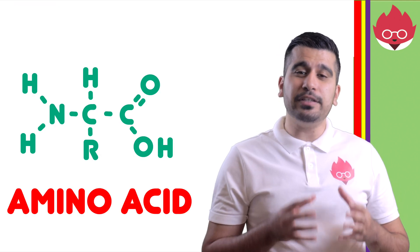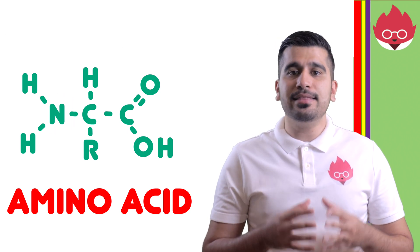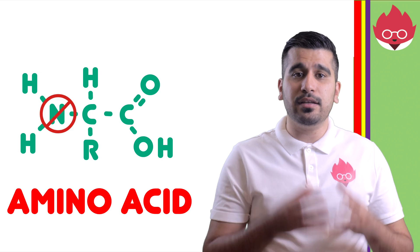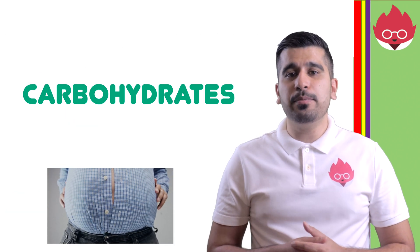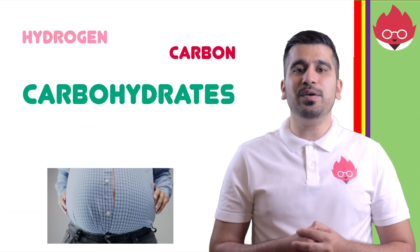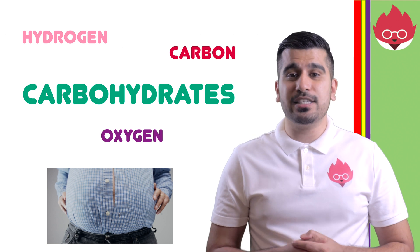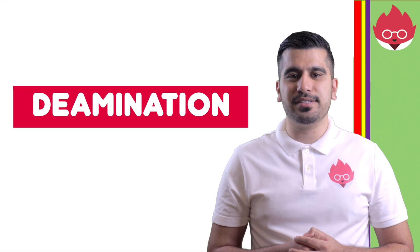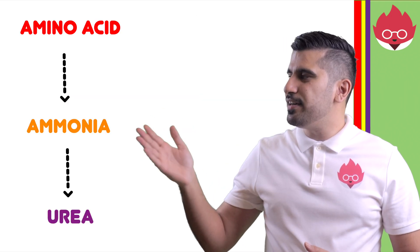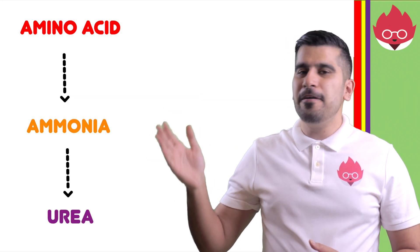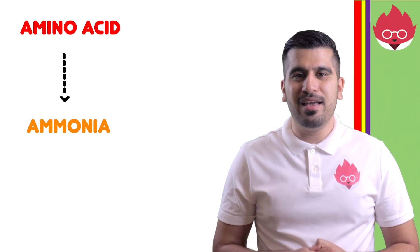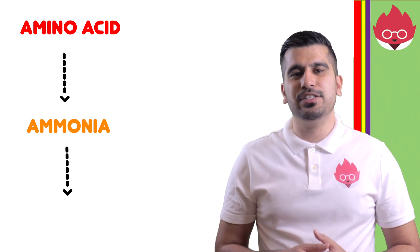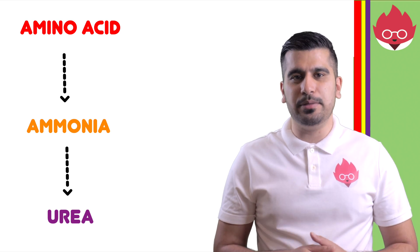Your body is not very good at storing nitrogen-based compounds. So when we have excess protein, this can't be stored in the body like carbohydrates can, which are made from carbon, hydrogen and oxygen. To remove this excess protein, a process known as deamination occurs. First, amino acids are converted into ammonia, and then the ammonia is converted into urea, ready to be expelled from the body.